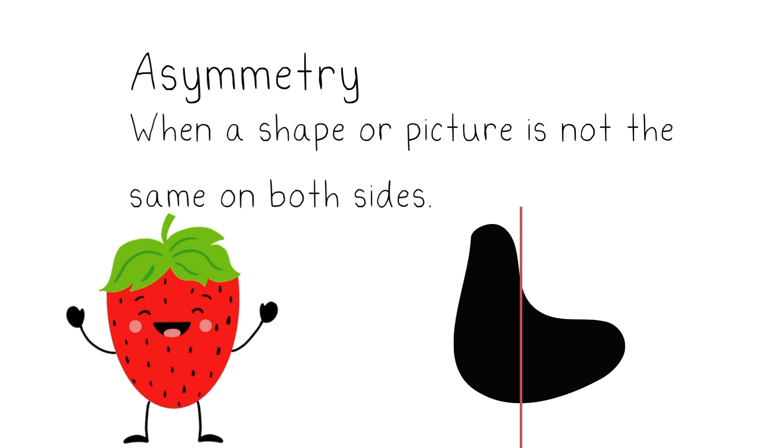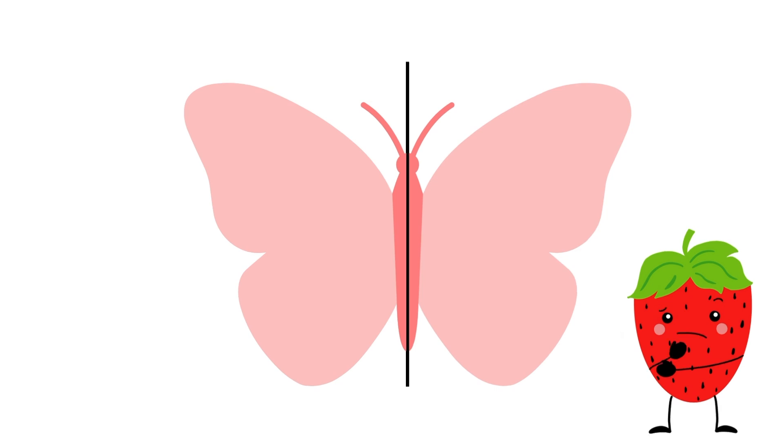If we folded this shape like a piece of paper down the middle, the sides would not match up perfectly. Let's practice — I'm going to show you a shape and you're going to tell me if it's the same on both sides, which is symmetrical, or if it's different on each side, which is asymmetrical.